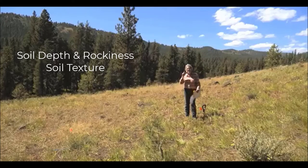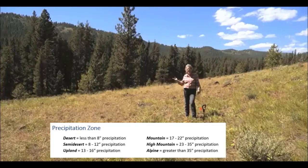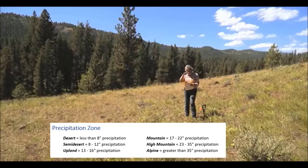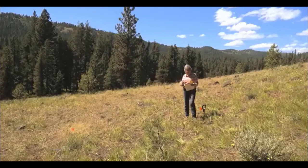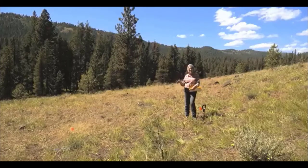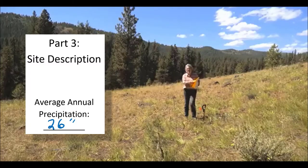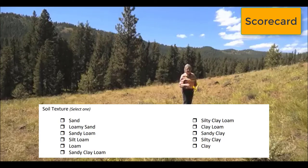After determining soil depth and texture, you also need to know the climate — how much precipitation this place gets. Before you start the CDE, you need to know the categories in your head. The data sheet lists precipitation zones: desert, semi-desert, upland, mountain, high mountain, and alpine. For example, an upland site gets 13 to 16 inches of precipitation. A sign will show you how much precipitation is at the site, and you'll need to place it in the correct category.